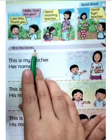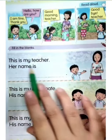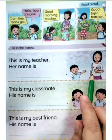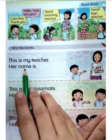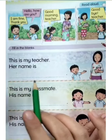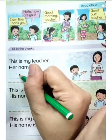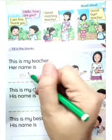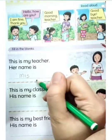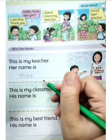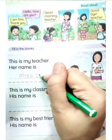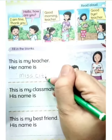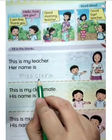Now look here — fill in the blanks. Look at the picture and then the word. This is my teacher. Look at this teacher — so her name is... we are going to write your teacher's name. So you write 'Miss' and then the name. We spell: M-I-S-S, Miss Citra.